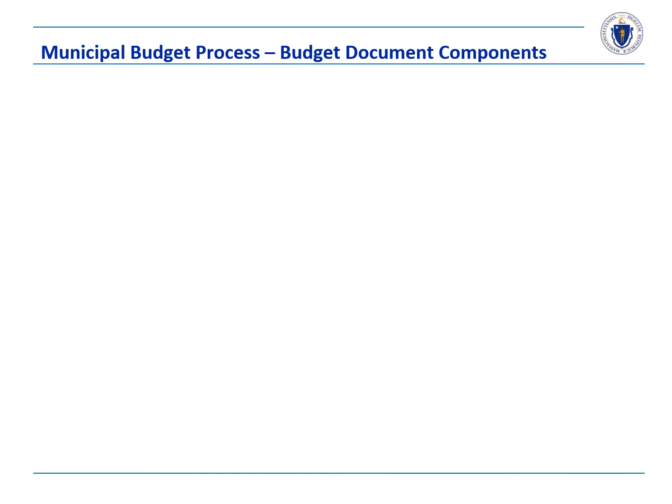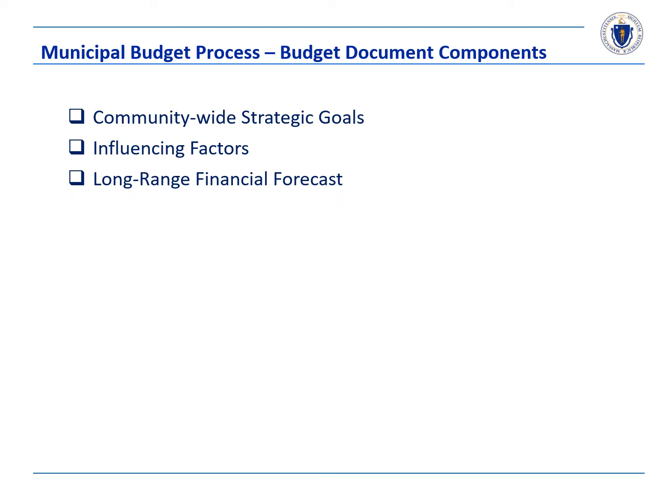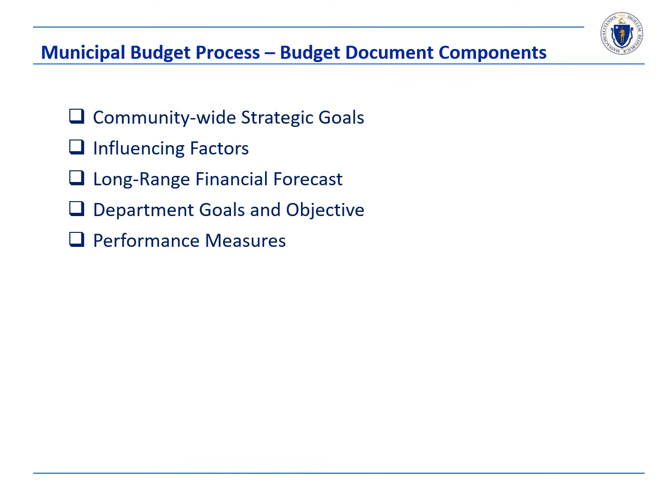In addition to the components described in the previous slide, it is a best practice for the budget document to include a statement of community-wide strategic goals and strategies that address long-term issues, descriptions of short-term factors influencing the decisions made in developing the forthcoming year's budget, a long-range financial forecast, departmental goals and objectives, and performance measures evaluating departmental goals and objectives.